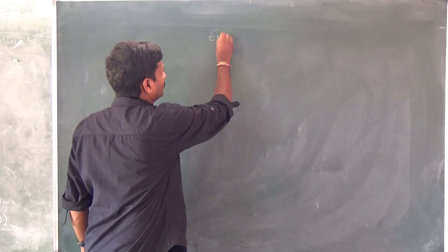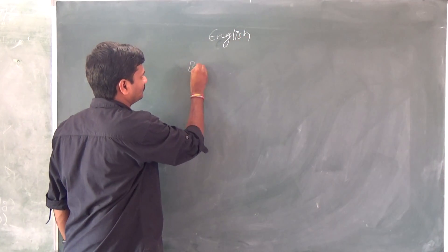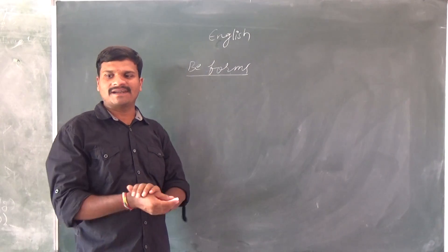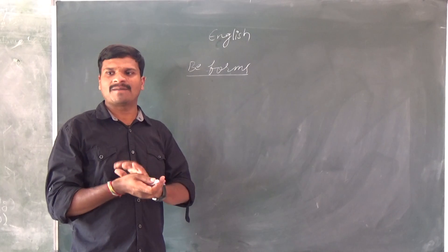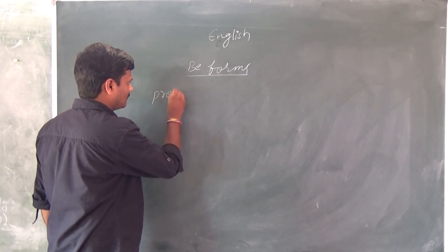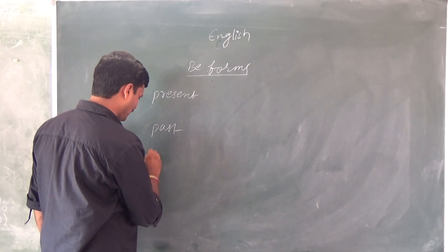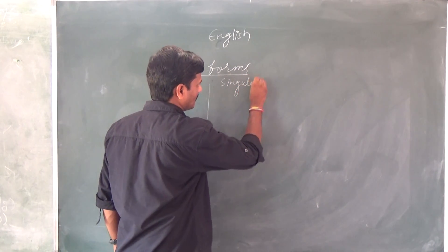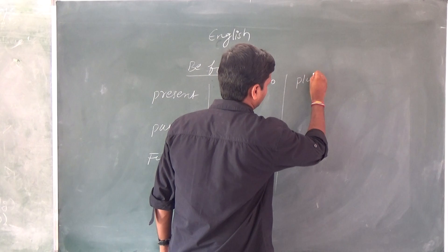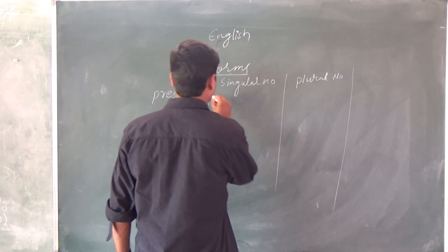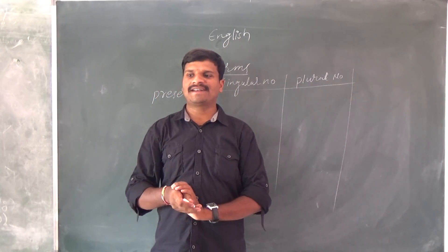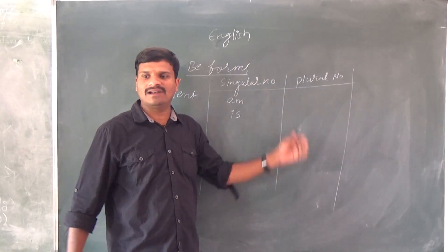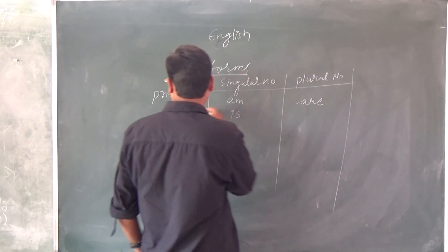Let's look at the Be forms. We have to know the Be forms because in present tense, past tense, and future tense, different Be forms will come. So first we need to know present tense, past tense, and future tense, and their singular and plural Be forms. In present tense, the singular form is 'is' and the plural form is 'are'. This is the present tense Be forms.